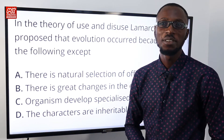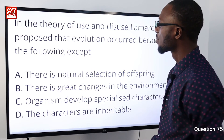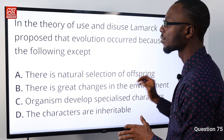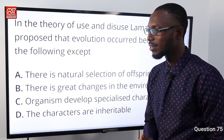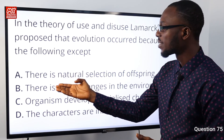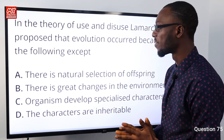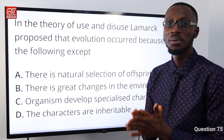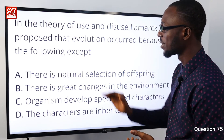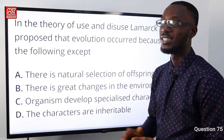Question 75: In the theory of use and disuse, Lamarck proposed that evolution occurred because of the following, except — option A — natural selection of offspring. The theory of natural selection was proposed by Charles Darwin, not Jean Lamarck. So this is the exception we are looking for, and option A is very correct.